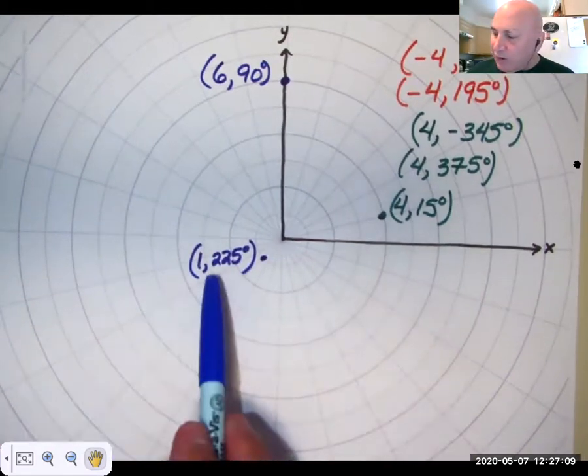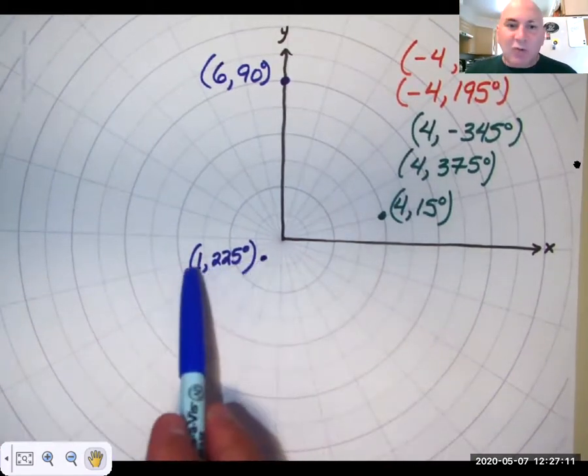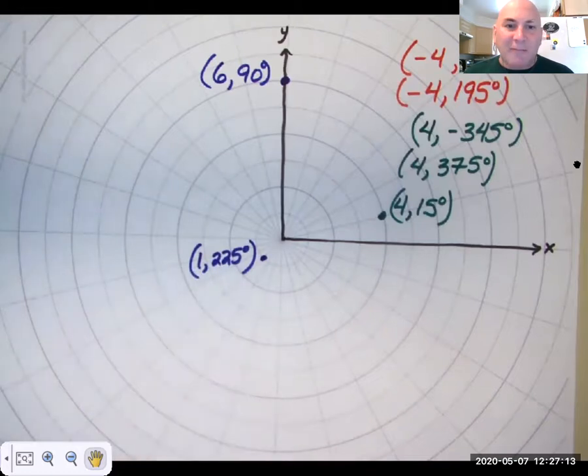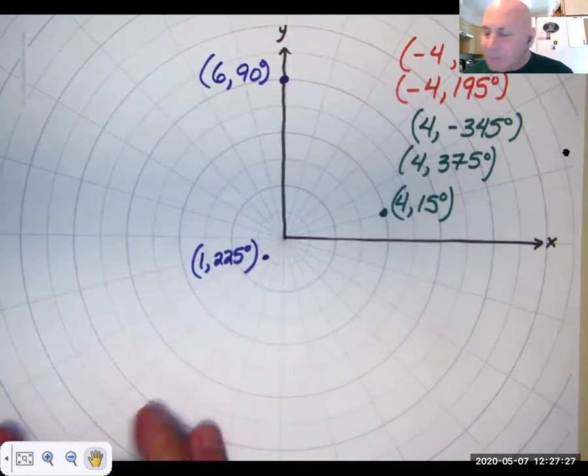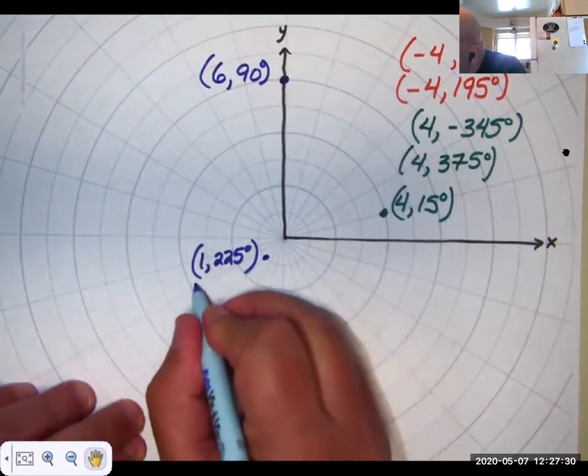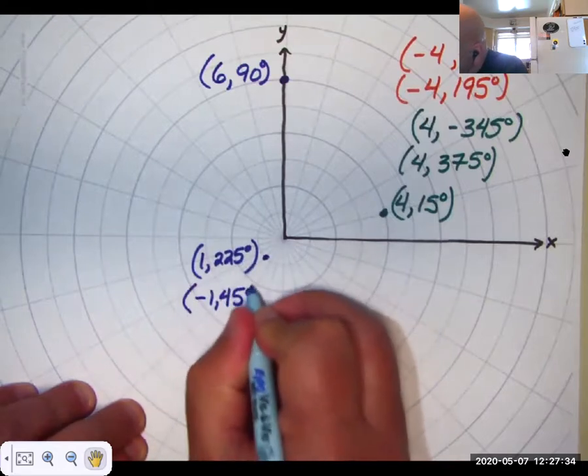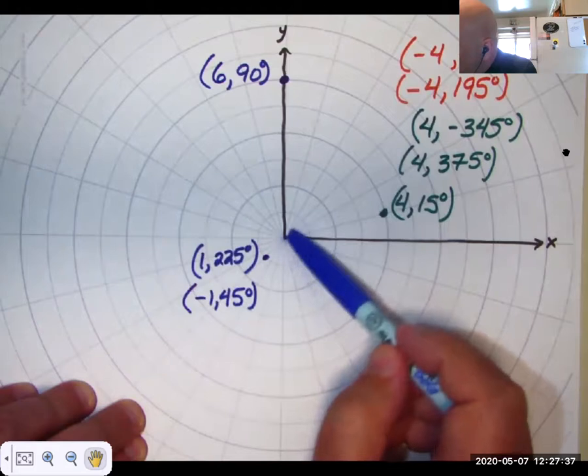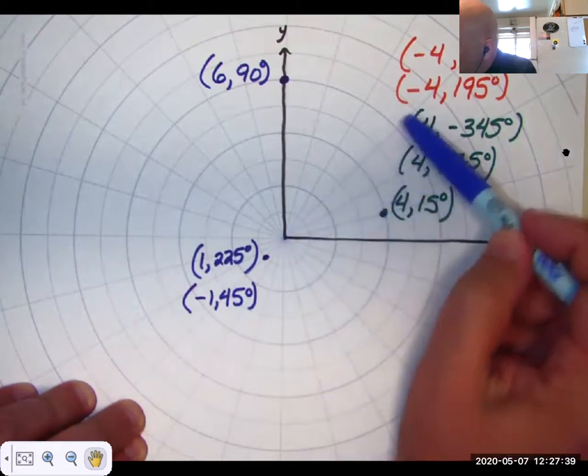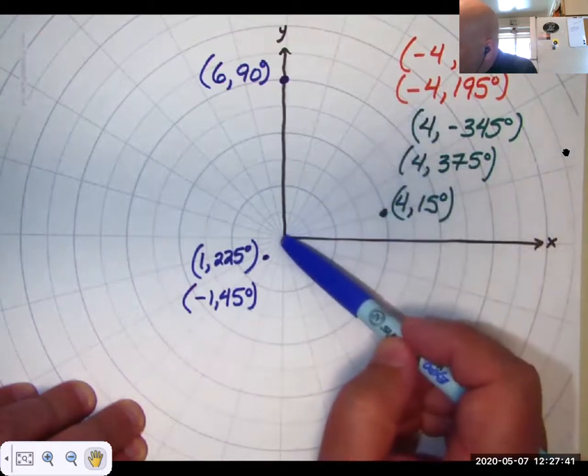Now graph this point or use the same point. Write it with a negative r and a positive theta. There are a number of ways of doing that. I'm going to call it negative 1, 45 degrees. Because we'd go to the 45 degrees, which is this direction out here. Then we go in the opposite direction, one unit.